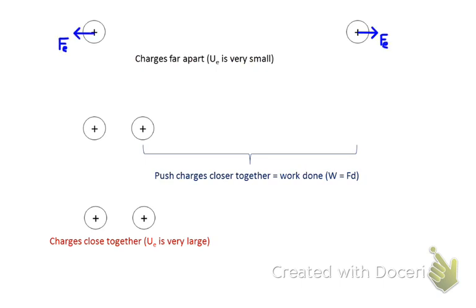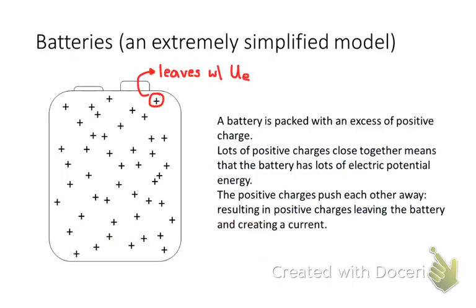When charges are far apart, they wouldn't have very much energy. As you push them closer together, you're doing work. And so when the charges are close together, now they've gained a bunch of potential energy and they're pushing each other with a lot of force because they're close together. A very simple picture of a battery would be just a big pool of positive charges that are all packed together. So they have lots of electrical potential energy. And so as those charges push other charges out, that's what creates a current.